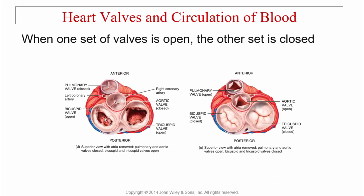When the AV valves — the tricuspid and bicuspid — open up, blood goes down into the ventricles. When the ventricles contract, the AV valves close and seal off, then the semilunar valves — the aortic and pulmonary — open. They alternate: AV valves open, blood fills the ventricles, ventricles contract, AV valves slam shut, semilunar valves open. When I say slam shut — you can hear that when you put a stethoscope on the chest. That's the lub-dub sound: the valves opening and closing.